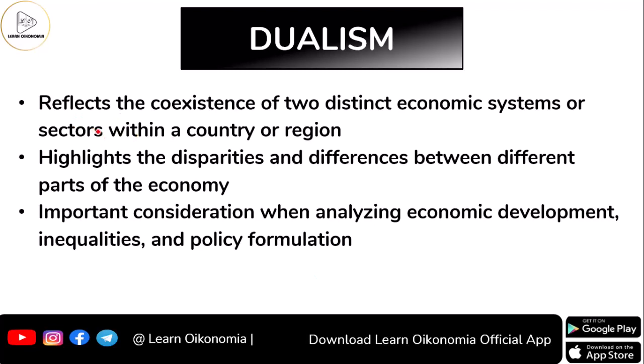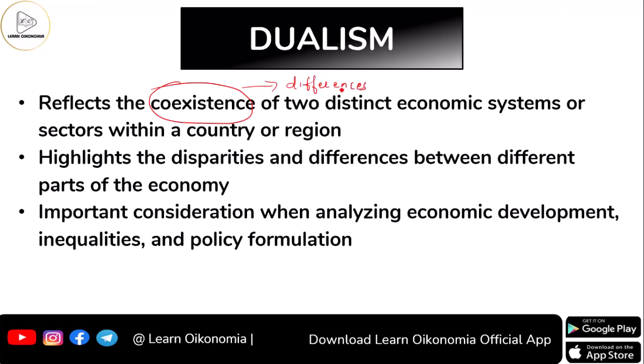Coming to the very idea of dualism — the meaning of dualism. Dualism tells us about the coexistence of two distinct types of economic systems. The idea of dualism itself shows differences. Some distinct economic systems or sectors exist, and these two economic systems happen within a particular region or country. Dual means two, so it reflects the simultaneous existence of two distinct economic sectors within a particular region or area.